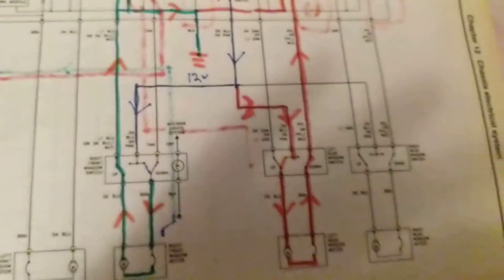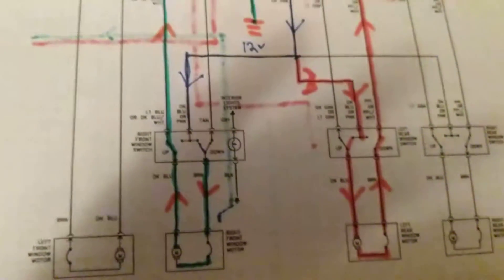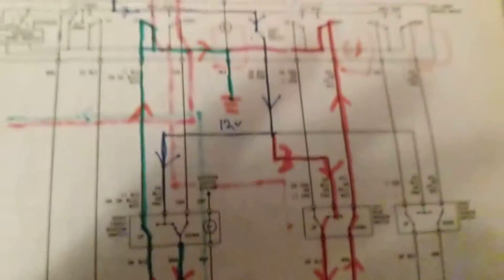We know we need a switch. We know we need a motor. Therefore, how does it happen electronically wise? Let's look at it.